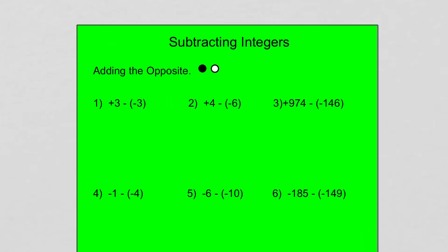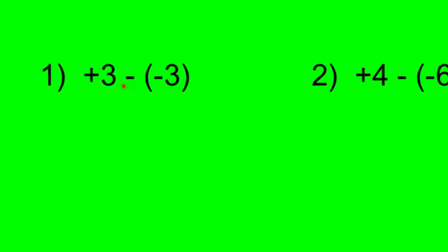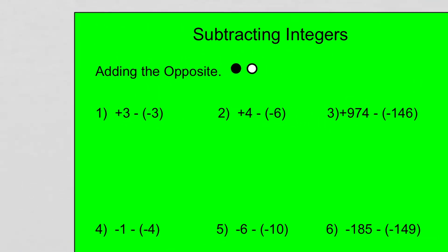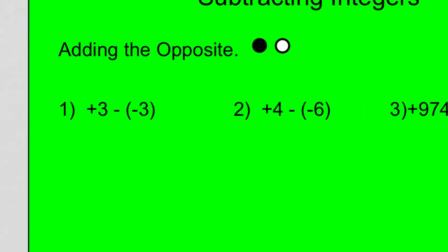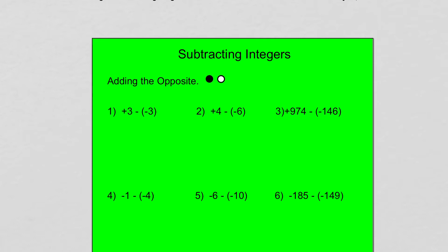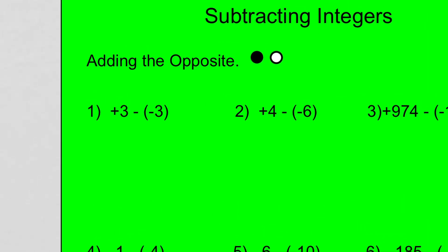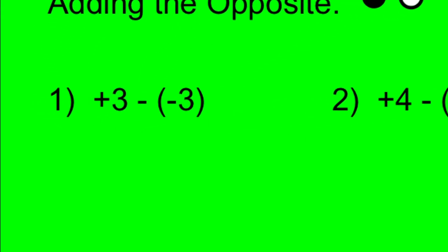Today we're going to look at subtracting integers — what happens when the first sign between the two integers is a minus sign. This makes things a little more tricky. We're going to focus on situations where we're subtracting integers and the first sign between them is a minus sign. The key thing to remember is we can always do something called adding the opposite, and that's what we're going to talk about today. We still have our integer model: shaded is positive, unshaded is negative.